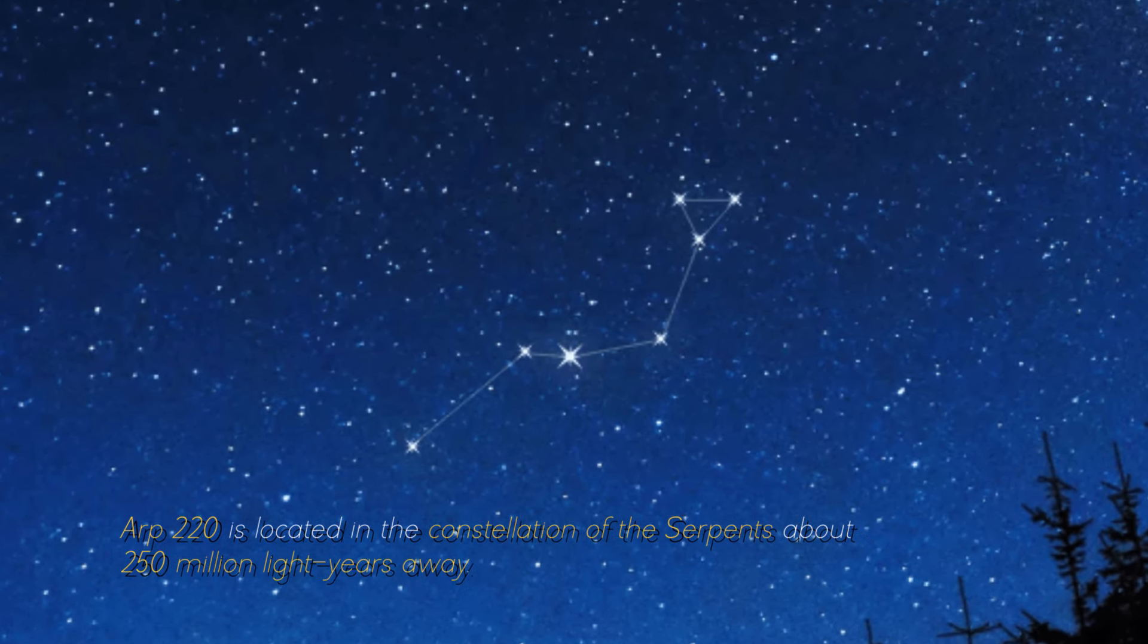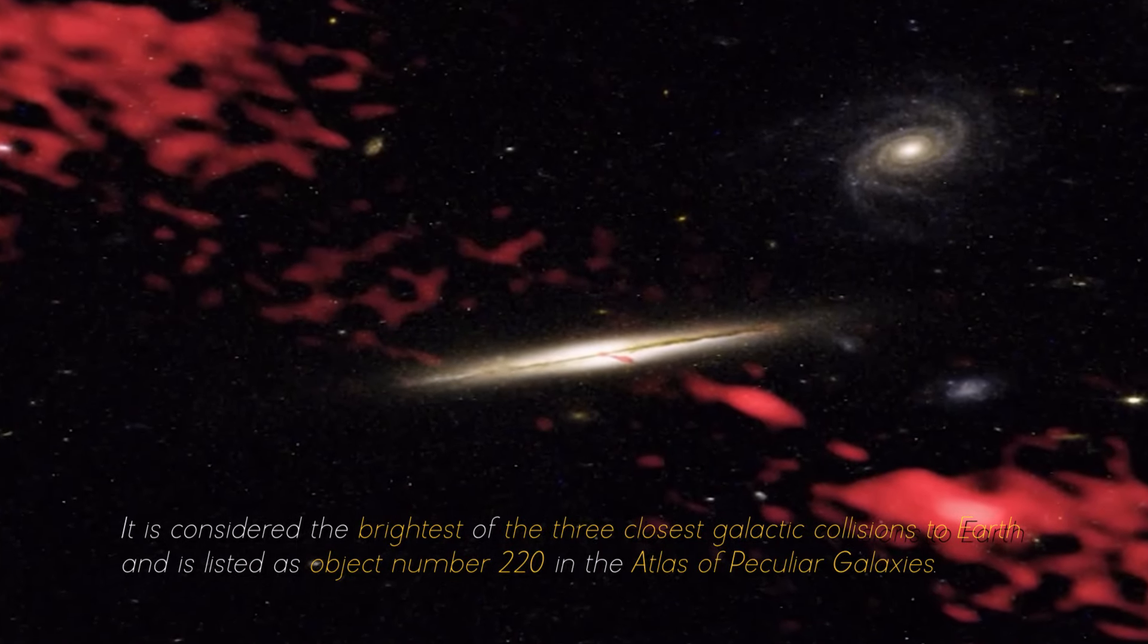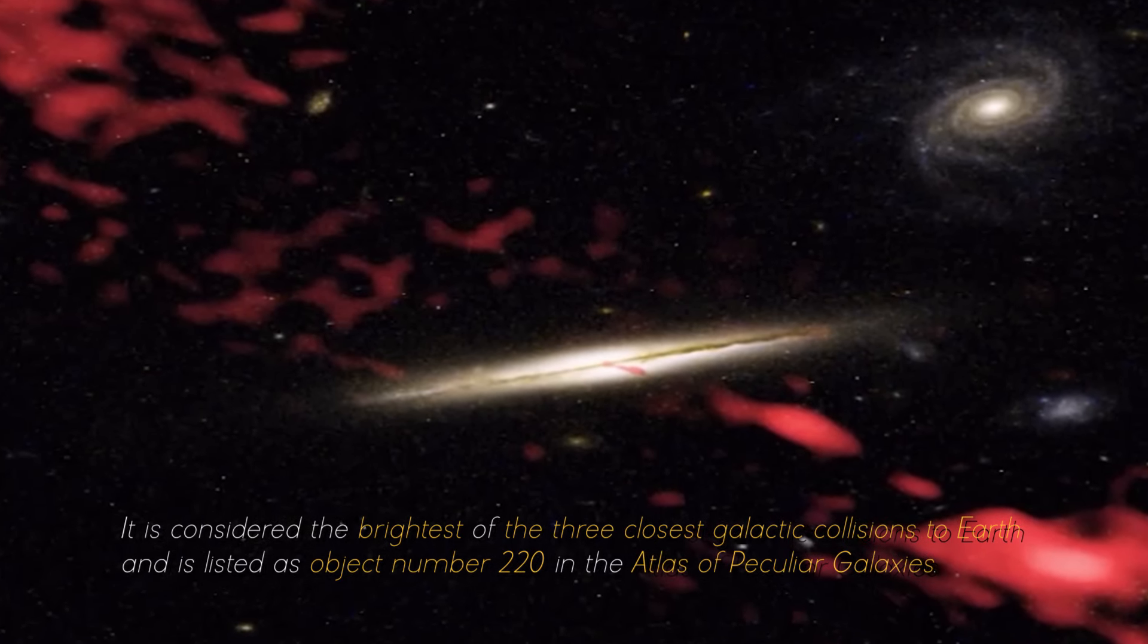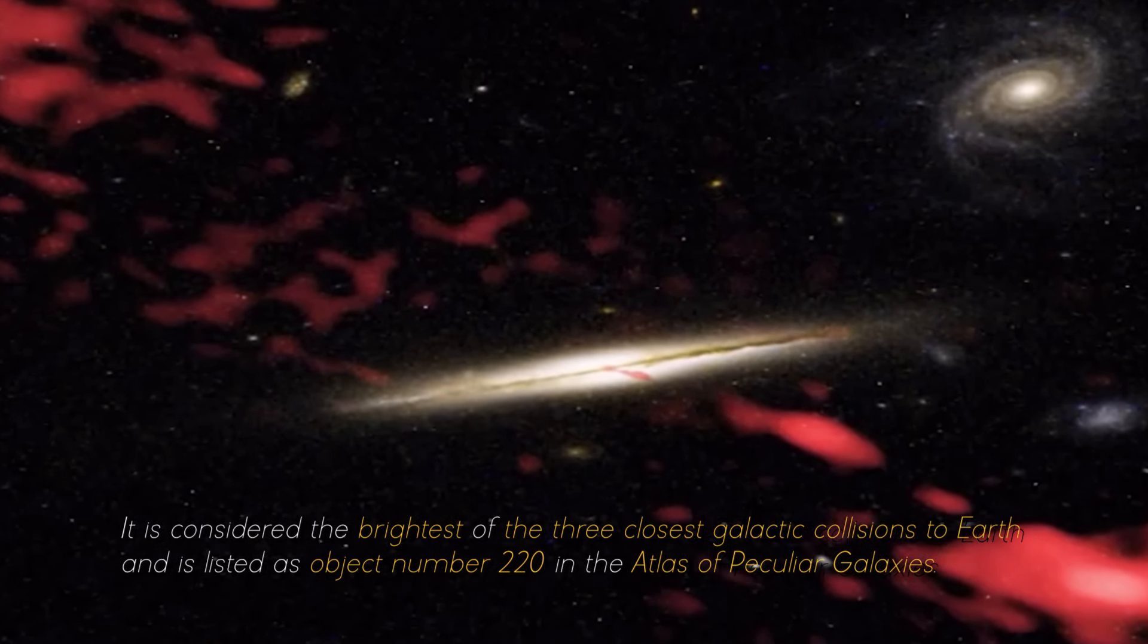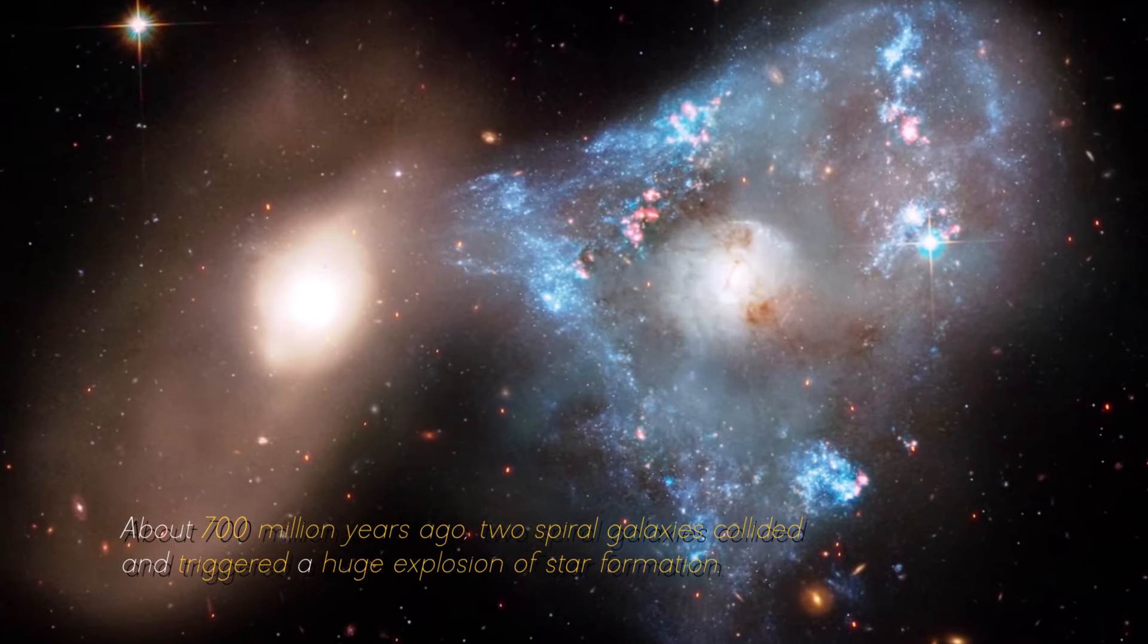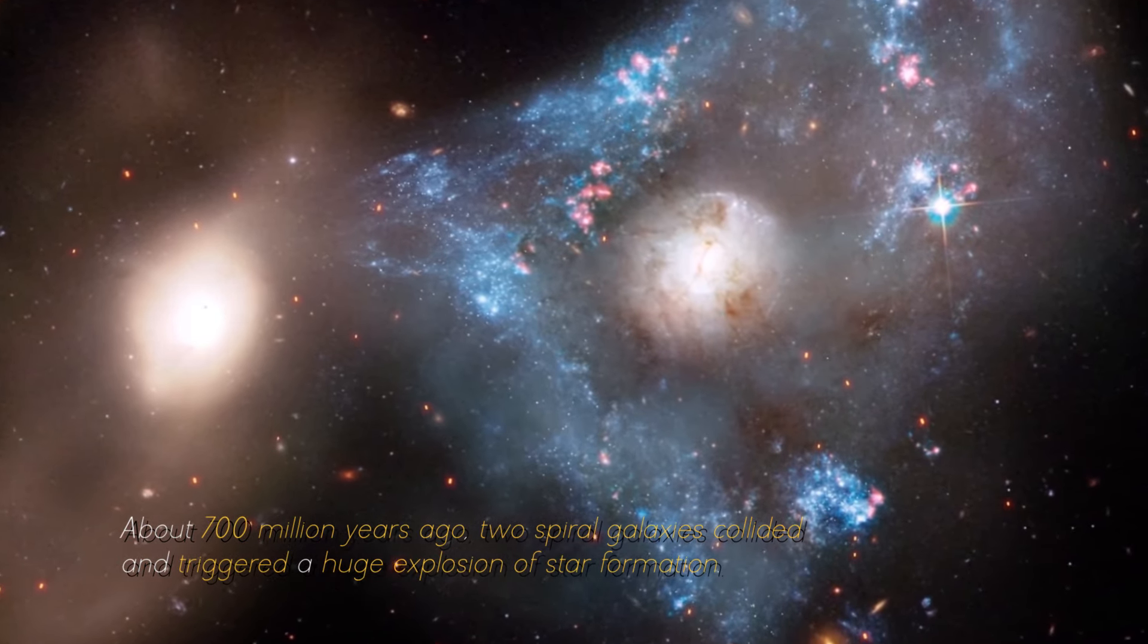ARP 220 is located in the constellation of the Serpents, about 250 million light-years away. It is considered the brightest of the three closest galactic collisions to Earth, and is listed as object number 220 in the Atlas of Peculiar Galaxies. About 700 million years ago, two spiral galaxies collided and triggered a huge explosion of star formation.